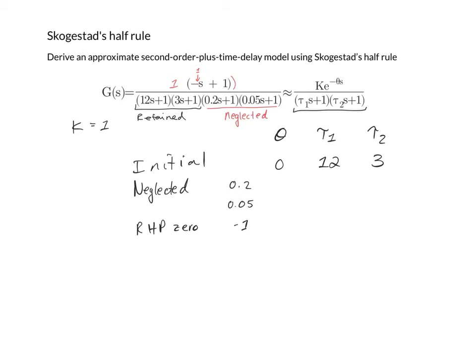The method specifies that the first neglected time constant is split evenly between the time delay and the smaller time constant. The remaining time constants are all added directly to the time delay.